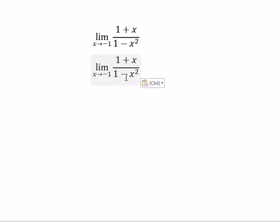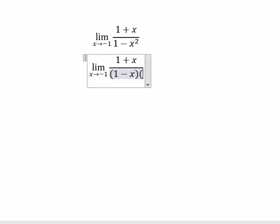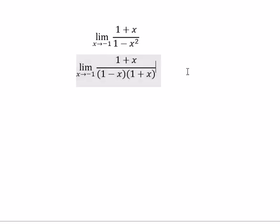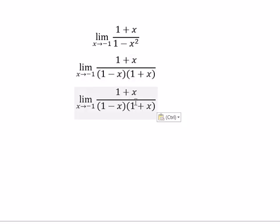1 minus x squared, we need to put into 1 minus x multiply with 1 plus x. Next, 1 plus x divided by 1 plus x, so they will cancel together.